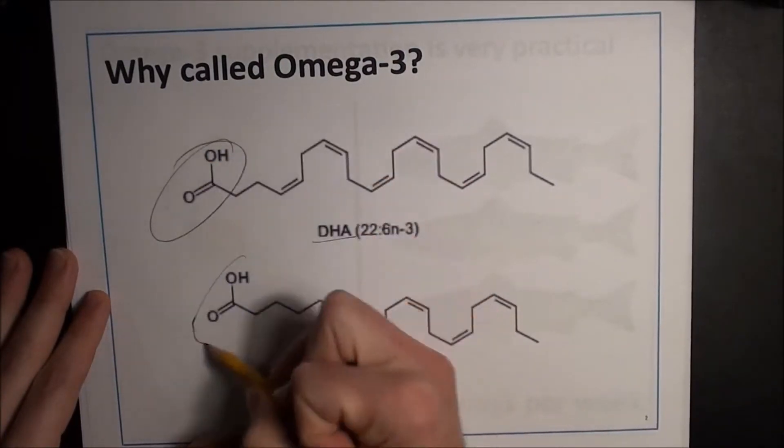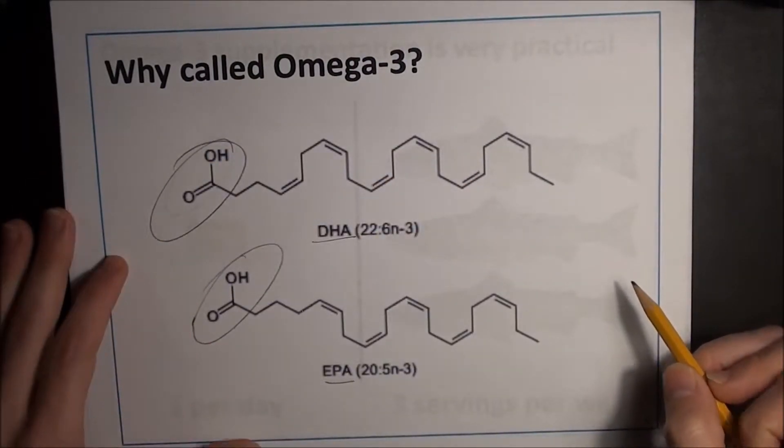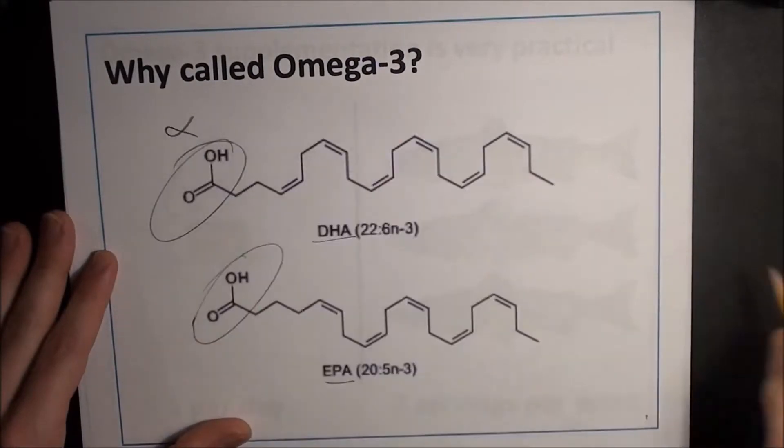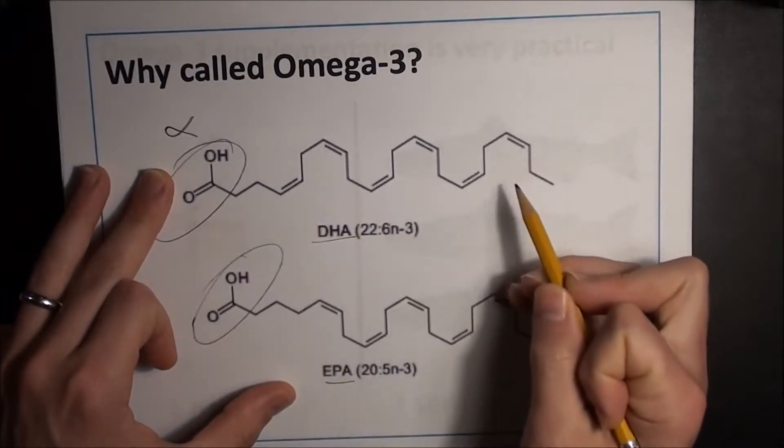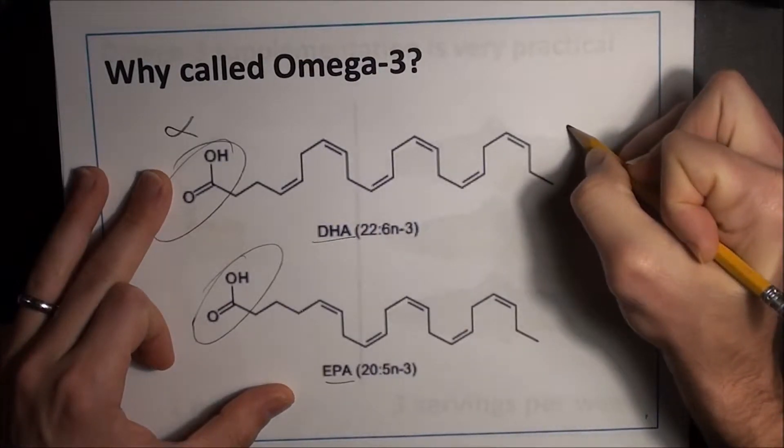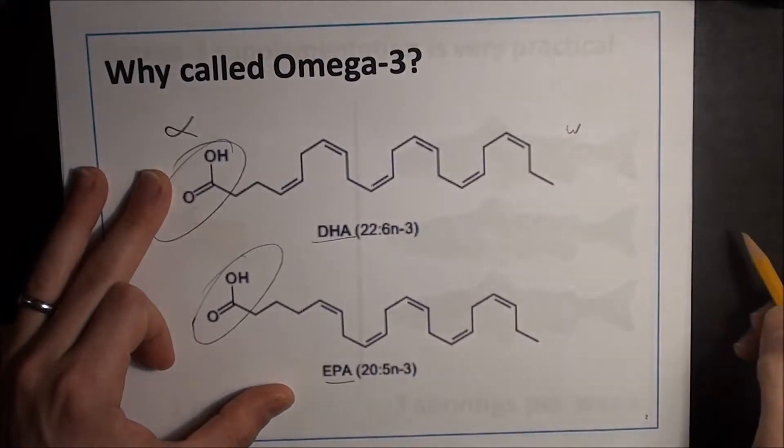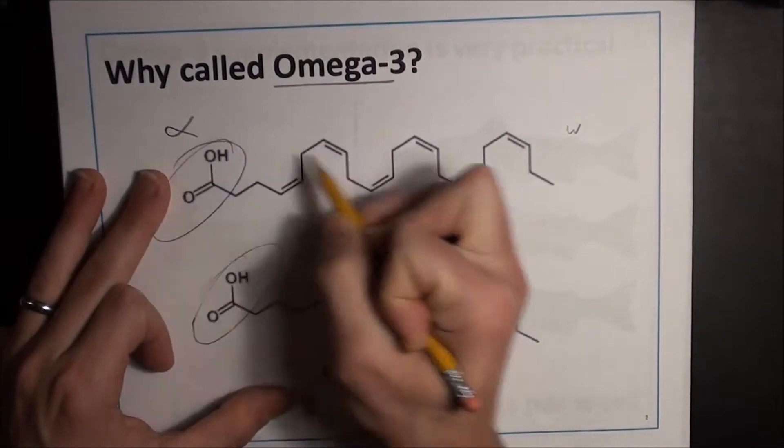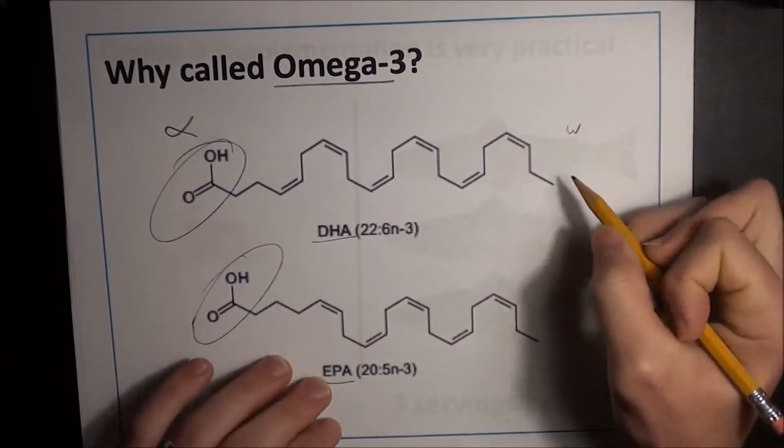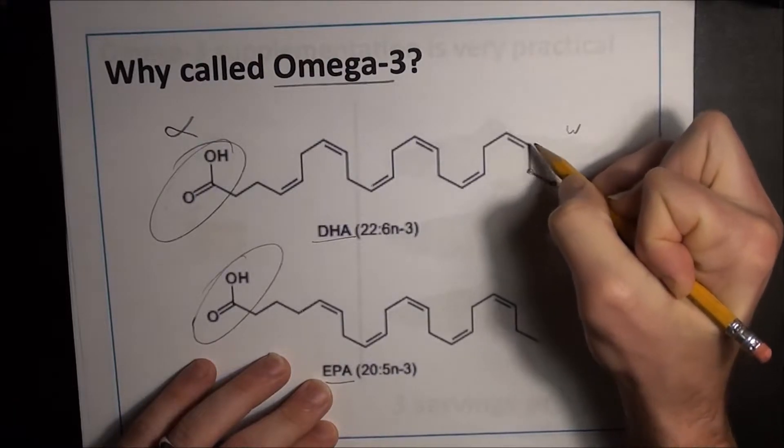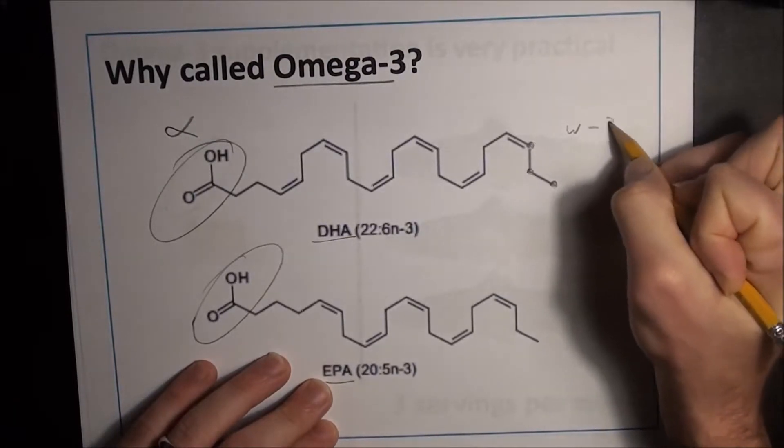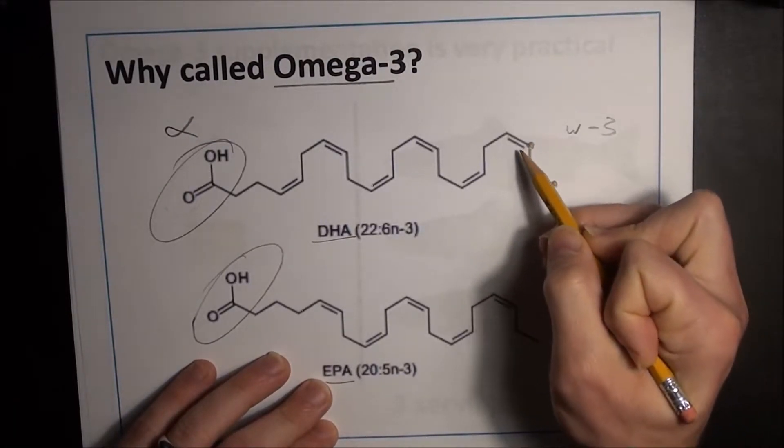They each have on one end an acid group, which we call, from the Greek, the alpha end. The other end of the chain is called the omega end. So alpha is the beginning, omega is the end. If you count back one carbon, two carbon, three carbon—that's when the first double bond appears. The name omega-3 is simply the naming convention for these types of molecules.